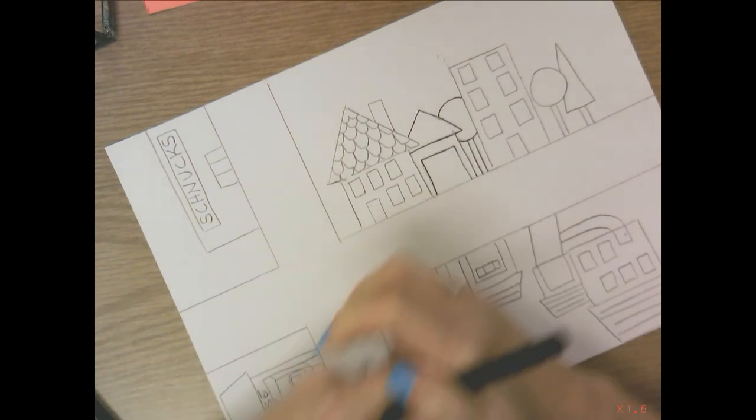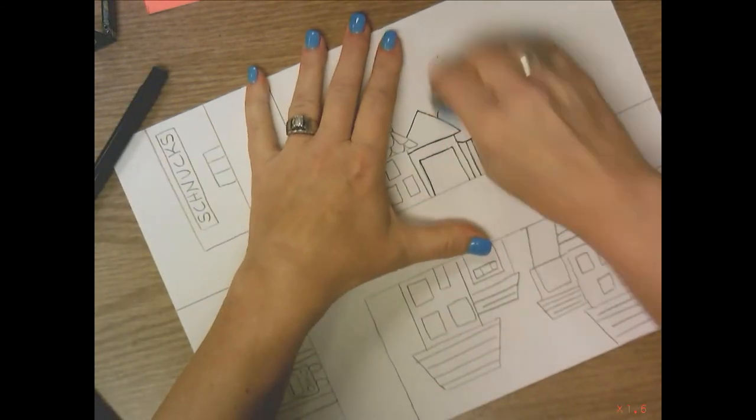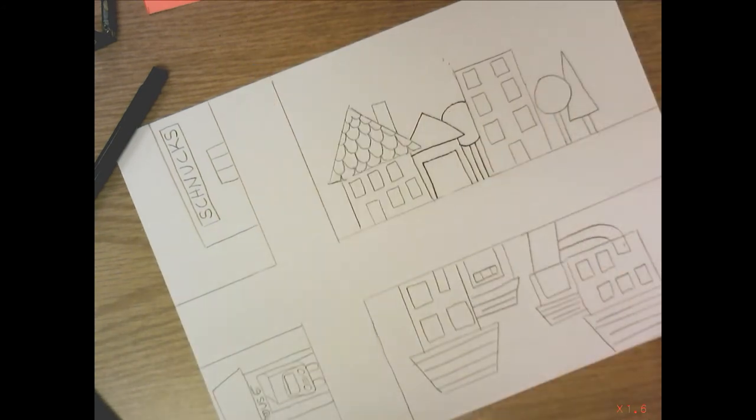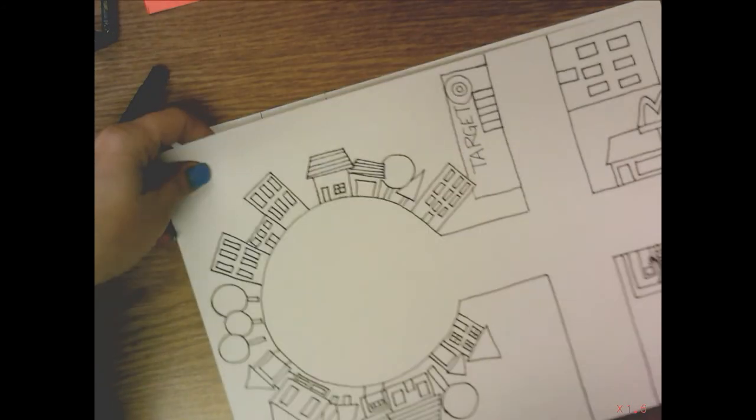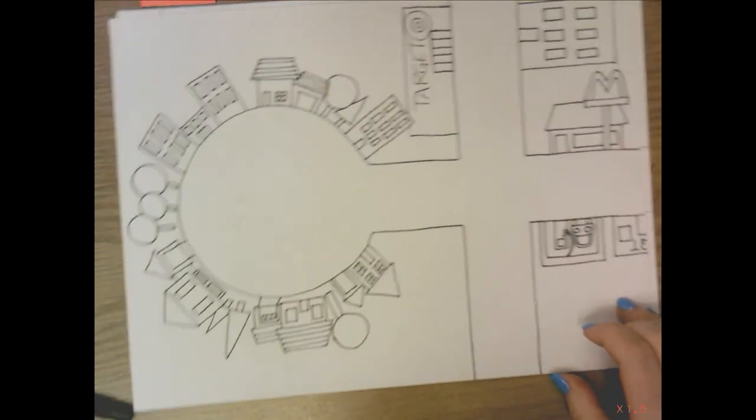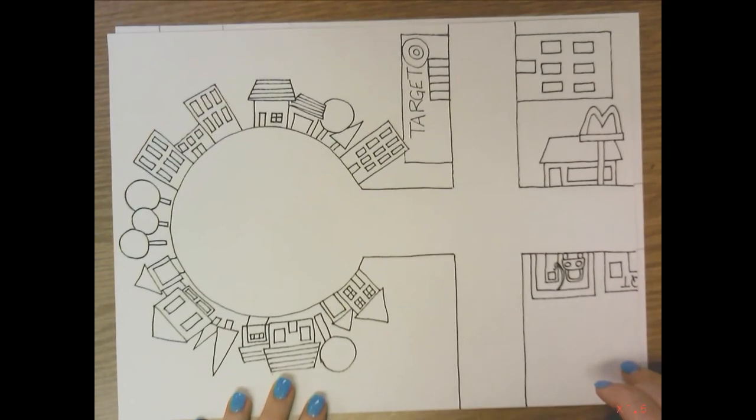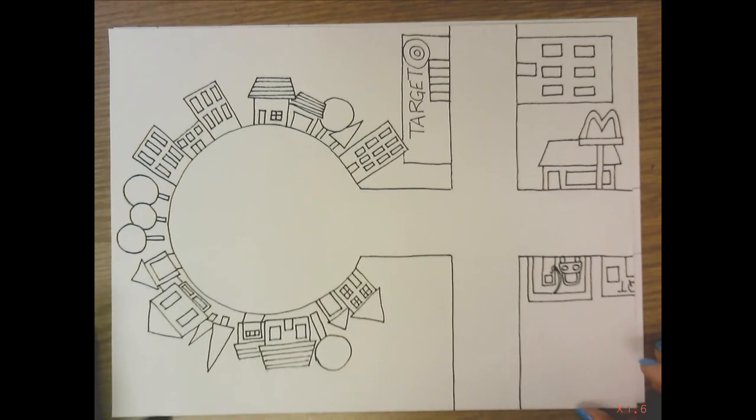Then after you trace with marker, you're going to use your pencil to erase any pencil lines that are poking out until you get something that looks like this.